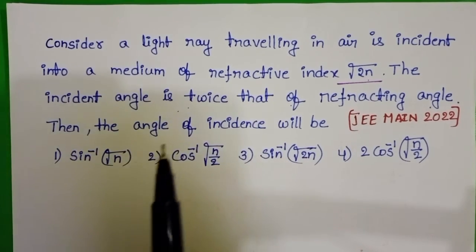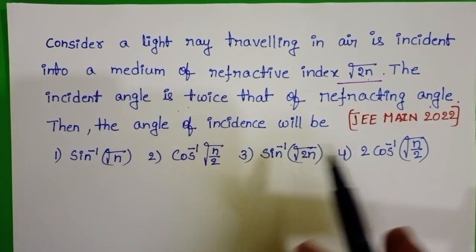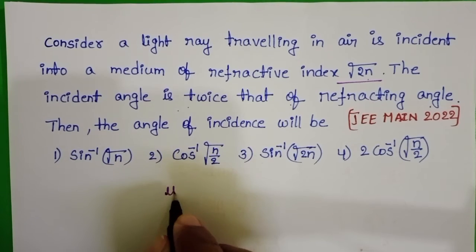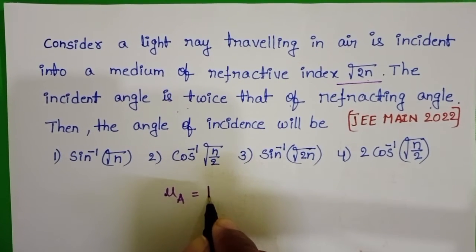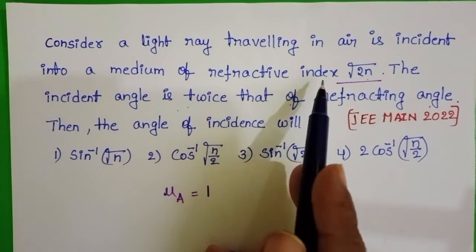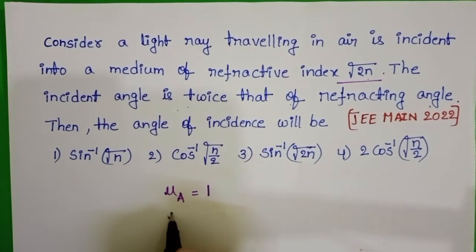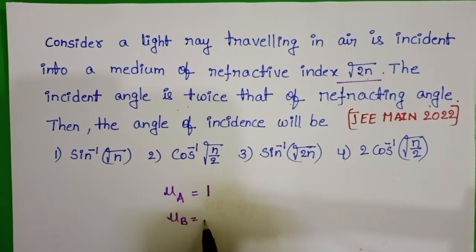In the given question, initially light ray is travelling in air. Refractive index of air is 1, and refractive index of the second medium is √(2n).